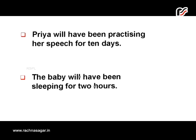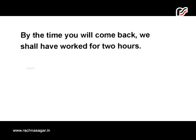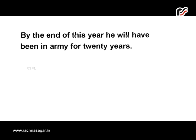Future perfect continuous tense: 'Priya will have been practicing her speech for 10 days' and 'The baby will have been sleeping for 2 hours.' This tense is used to describe an action that will be in progress even after a given point of time in the future, and to express the duration of an action up to a certain time in the future. For example: 'By the end of this year, he will have been in the army for 20 years.' This was all about tenses.